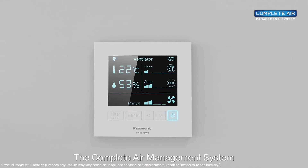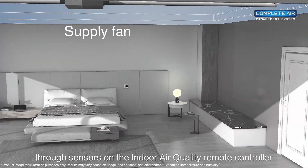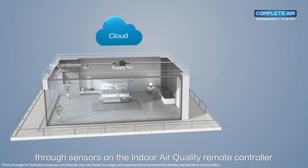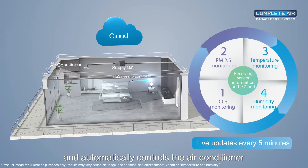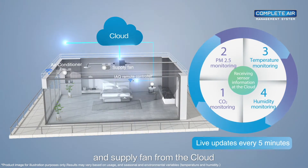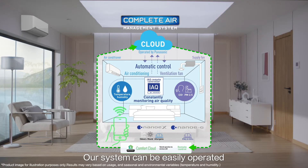The complete air management system continuously monitors air quality through sensors on the indoor air quality remote controller, and automatically controls the air conditioner and supply fan from the cloud. Our system can be easily operated through an app on your smartphone.